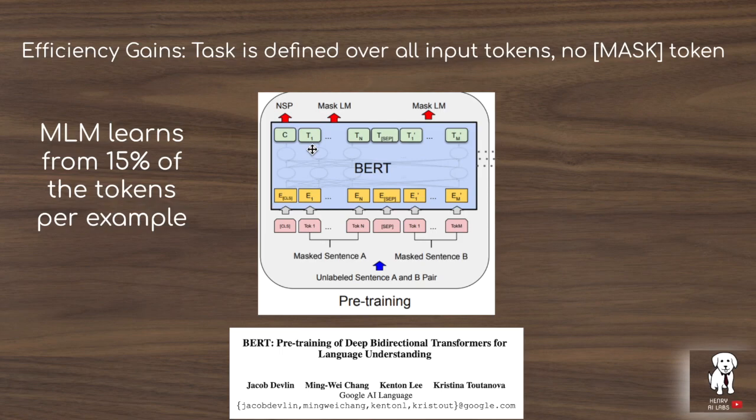During backpropagation and gradient descent, you take partial derivatives with respect to all parameters in the network. For parameters that produce T_1's output embedding, if that token isn't masked, those parameters won't be updated at all. In replace token detection, each output layer predicts original or replaced, so the loss function is applied to every token — making it more efficient for updating embeddings across all input tokens.